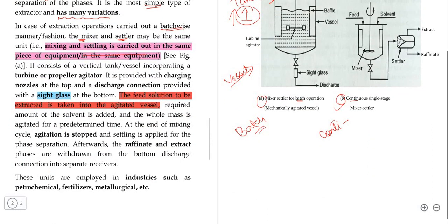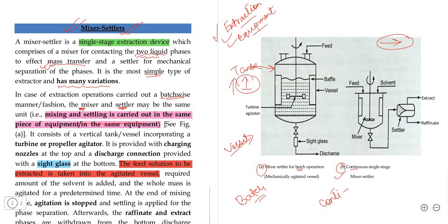It is provided with a charging nozzle. A charging nozzle means what is called a joint feed. It consists of a vertical tank incorporating a turbine and propeller agitator.